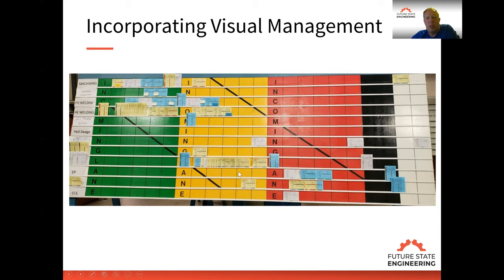Those abnormal conditions are what we talk about in the production meeting, which is 15 minutes long. You can see there are some black cards out here, meaning they're late, so we need to be taking expedited efforts to get these jobs completed. We're also collecting data on what caused these jobs to go late, and using Pareto analysis on that data to understand where we need to focus to make better improvements and maintain stability.